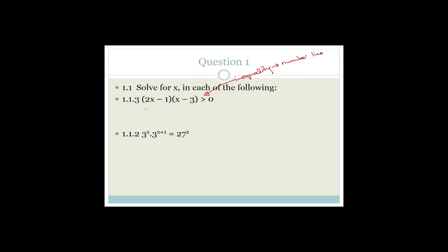A common error is that students multiply out and then factorize back to get exactly the same brackets. They've already factorized it for you. There are two critical values — two places where this expression equals zero. If 2x minus 1 equals zero, then x equals a half. If x minus 3 equals zero, then x equals 3. Those are our two critical values.